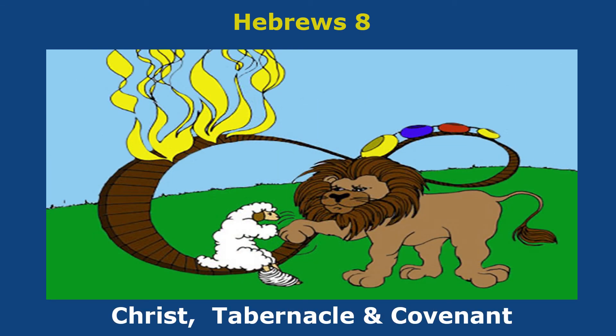Hebrews chapter 8. Chapter 8 is a roller coaster because it looks like an 8 sideways. Christ is a lamb with a burnt ankle. 'Tabernacle and Covenant' is the lamb's taped burnt ankle for tabernacle, and the lion and the lamb are making a covenant or contract to rebuild the burnt roller coaster.